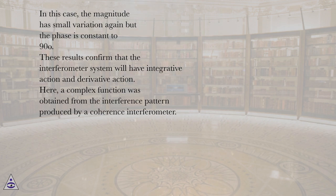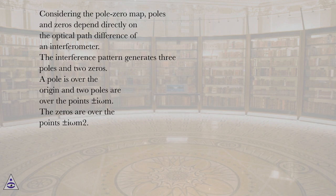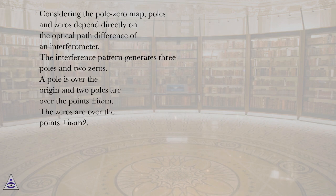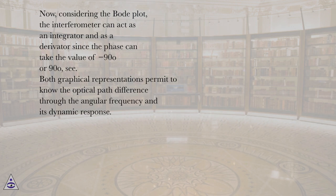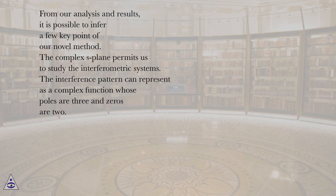A complex function was obtained from the interference pattern produced by a coherence interferometer. Considering the pole-zero map, poles and zeros depend directly on the optical path difference of an interferometer. The interference pattern generates three poles and two zeros. A pole is over the origin and two poles are over the points ±jω_m. The zeros are over the points ±jω_m/2. Considering the Bode plot, the interferometer can act as an integrator and as a differentiator since the phase can take the value of −90° or +90°. Both graphical representations permit knowing the optical path difference through the angular frequency and its dynamic response.